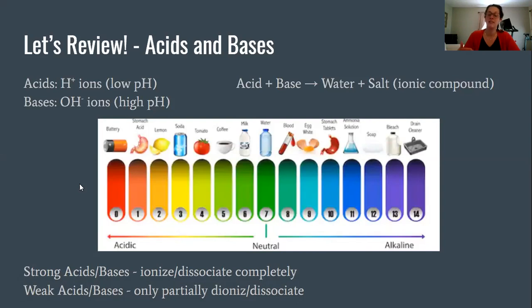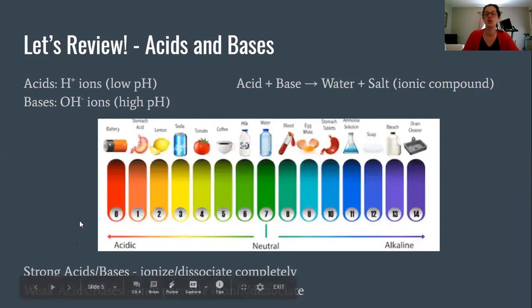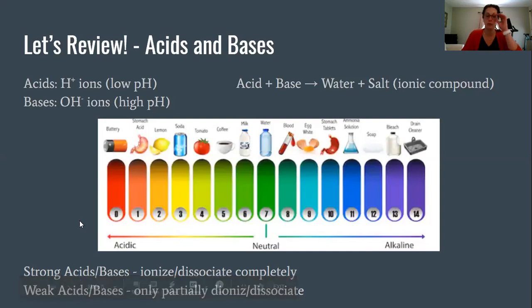However, you could still have a very concentrated weak acid with a very low pH, or a very concentrated weak base with a very high pH — so it is possible. The strength of the acid just depends on how many ions each individual sample can produce.